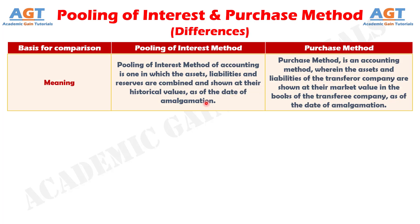Difference number 1: when the assets, liabilities, and reserves are combined and shown at their historical values as of the date of amalgamation, the method is called pooling of interest method. Conversely, when the assets and liabilities of the transferor entity are shown at their market value in the balance sheet of the transferee entity as of the date of amalgamation, it is called purchase method.